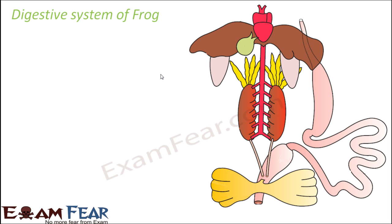One thing to note at the beginning is that frogs have a shorter intestine compared to cockroach or earthworm. The reason is their food habit — frogs are carnivores, meaning they eat flesh. It is actually easier to digest flesh than plants. Plants are made up of cellulose, which is very difficult to digest, whereas animals do not have much cellulose, so flesh is easier to digest. Animals that are purely carnivorous generally have a short intestine.